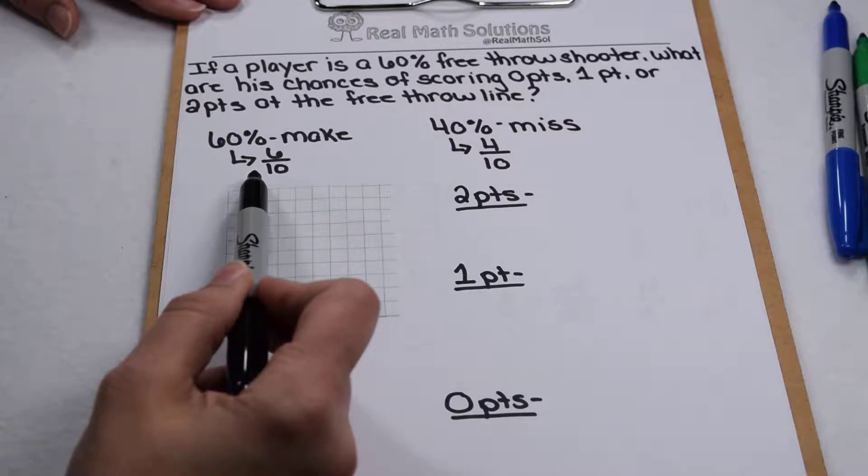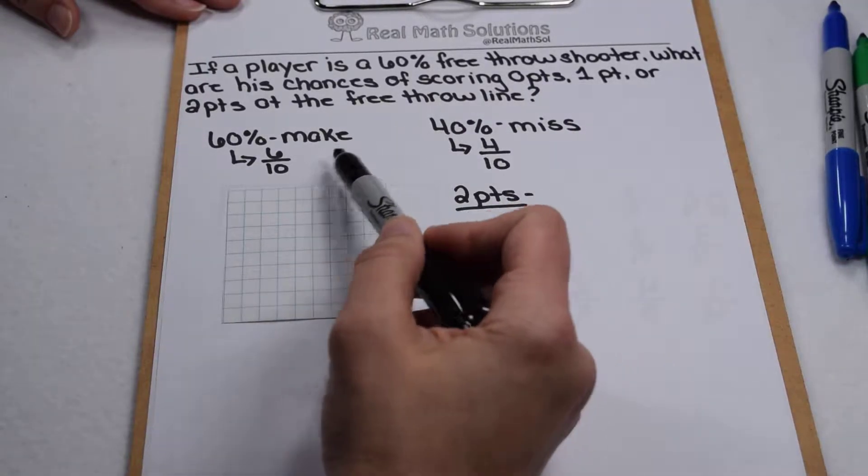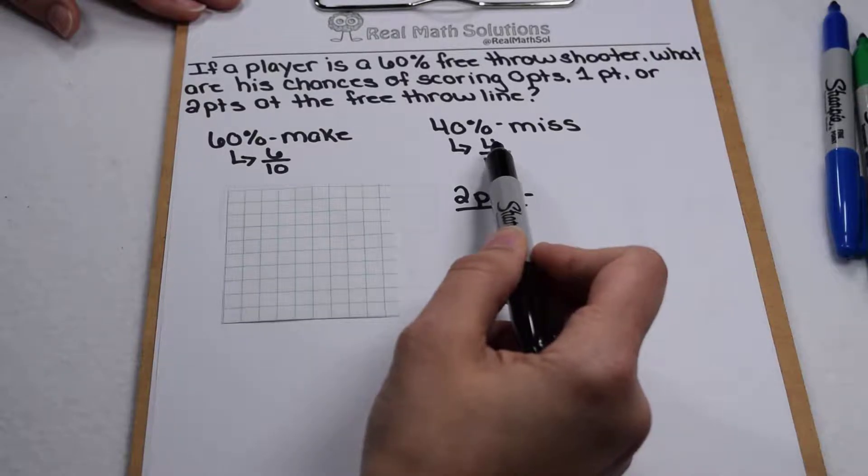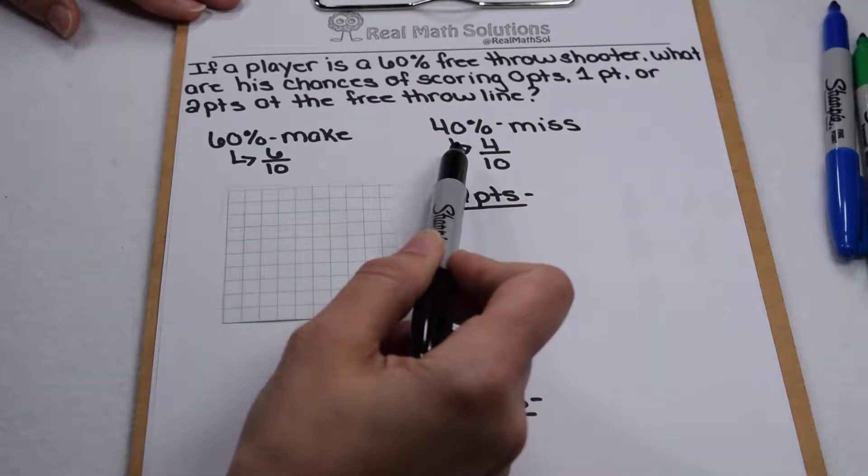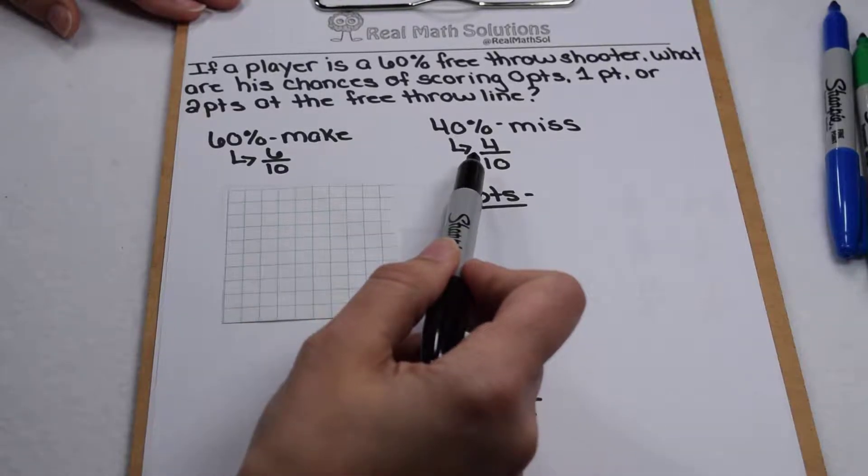Well, first off, if he's a 60% free throw shooter, that means he has a 40% chance of missing it because together those are worth 100%. Instead of thinking about it in terms of percents though, let's think about it as fractions. 60% would be the same as 6 tenths, 40% would be the same as 4 tenths.